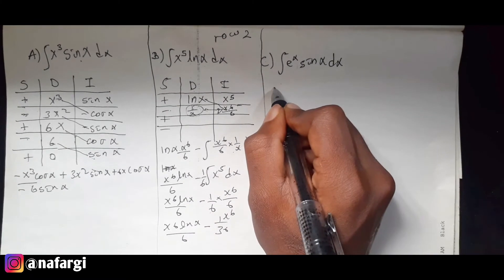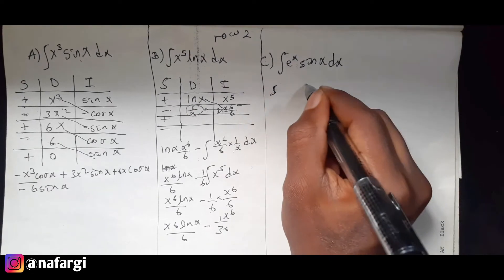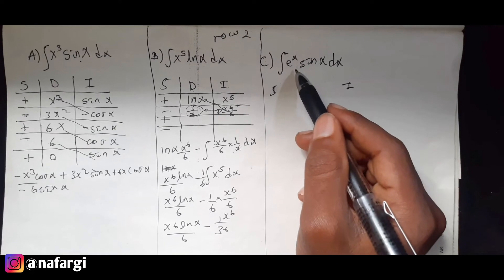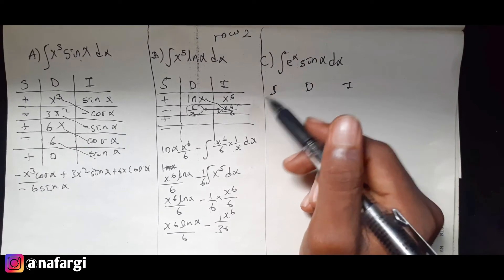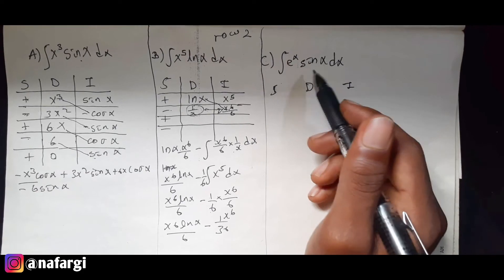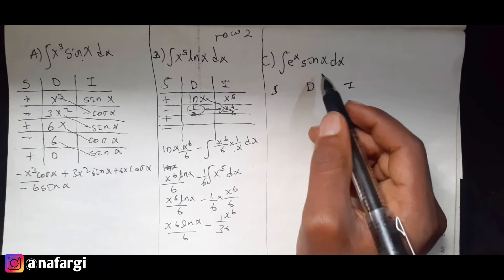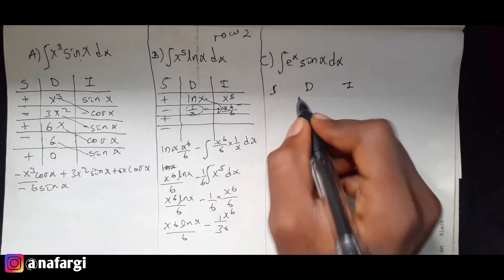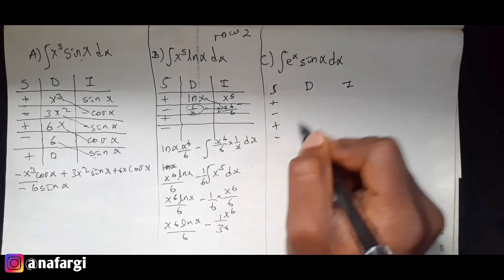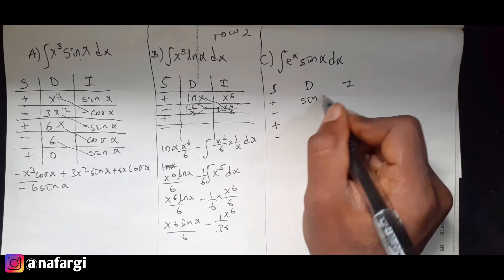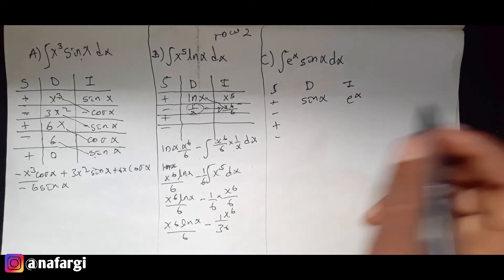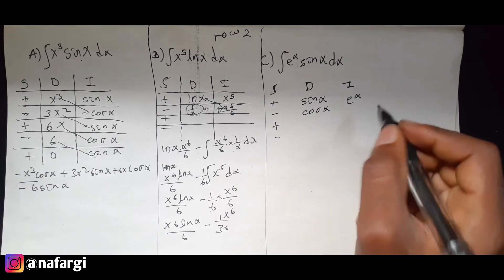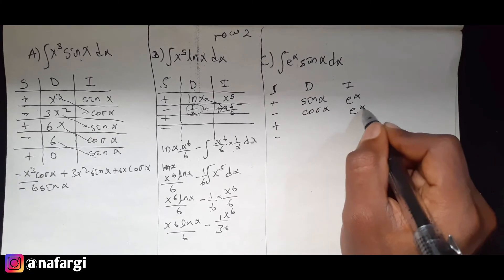First, we have to check it out. Sin, d, i — if you have a derivative, you can check it out. Plus, minus, plus — minus sin x. We have to integrate it. Sin x, cos x — you can make x because we have to integrate it.